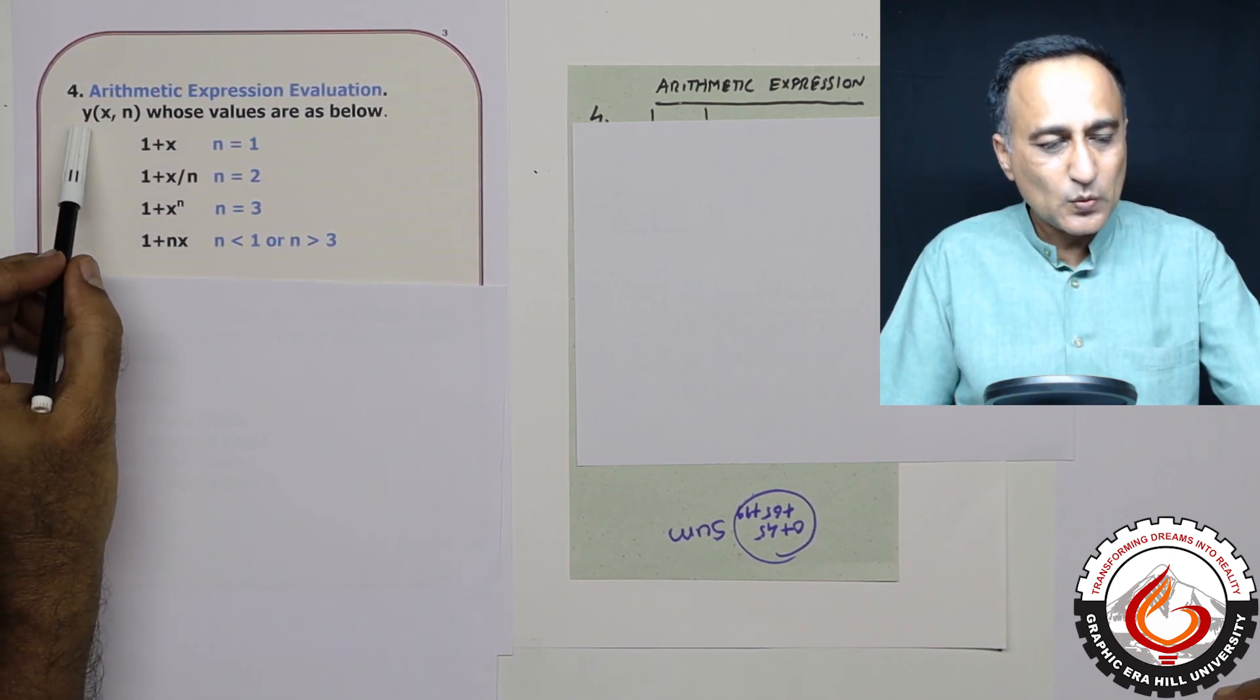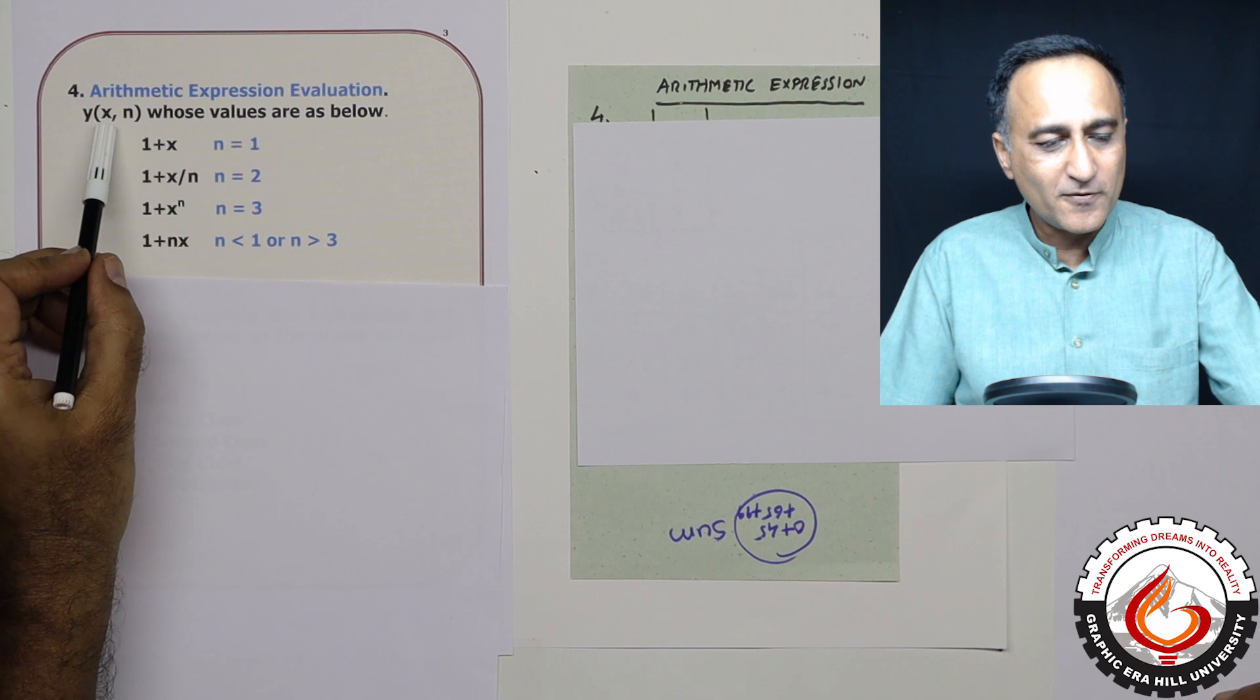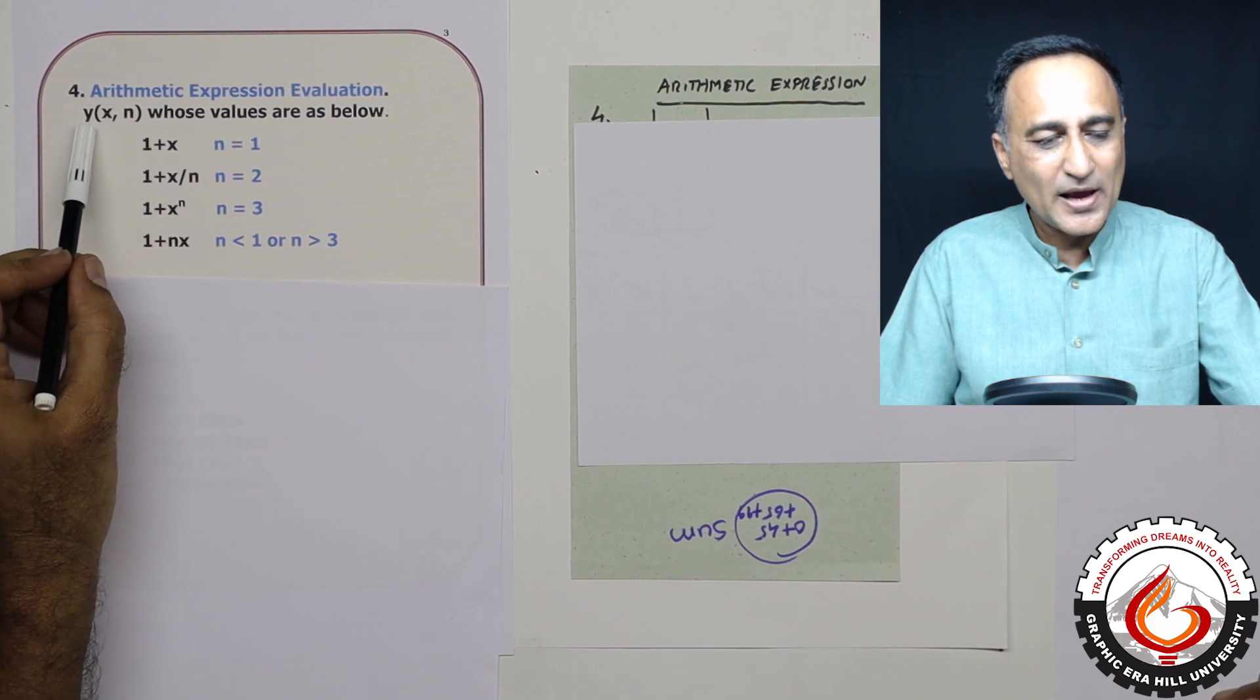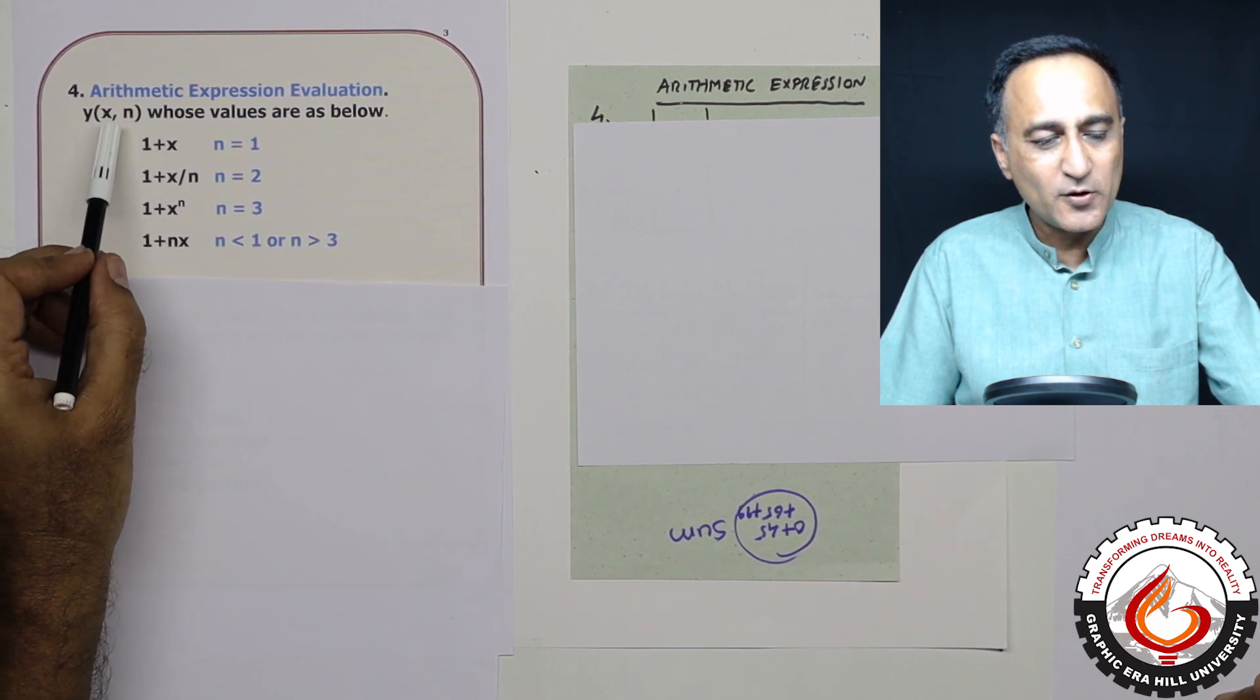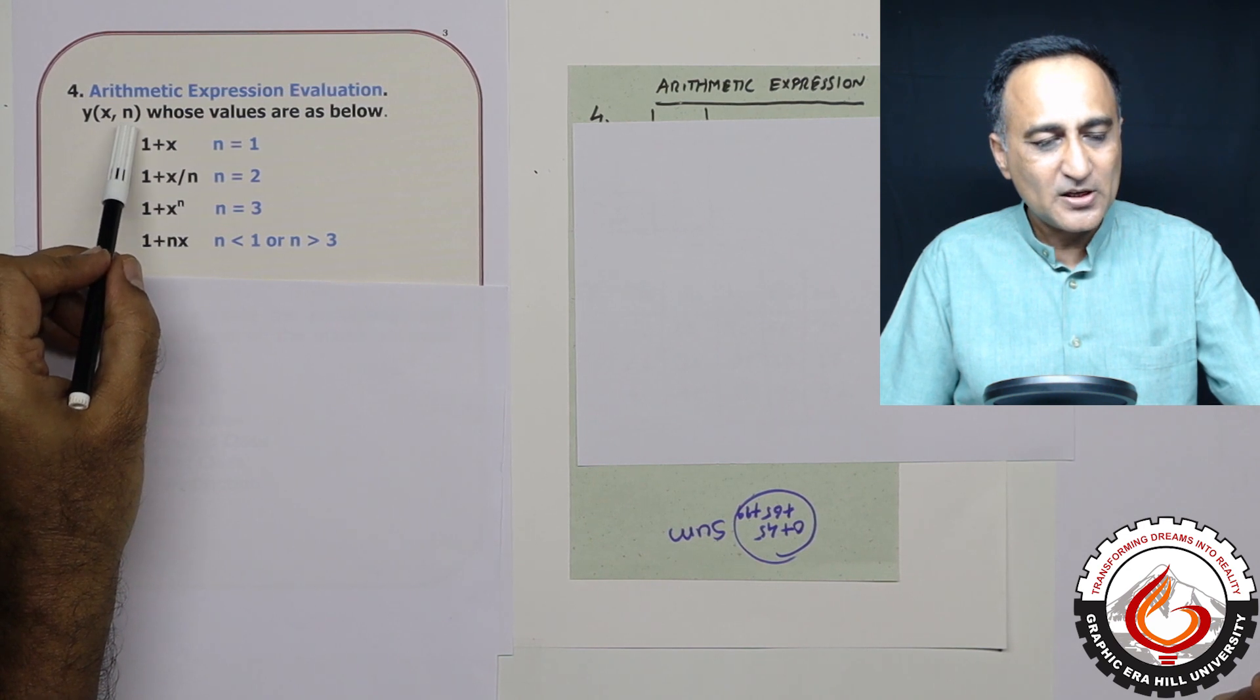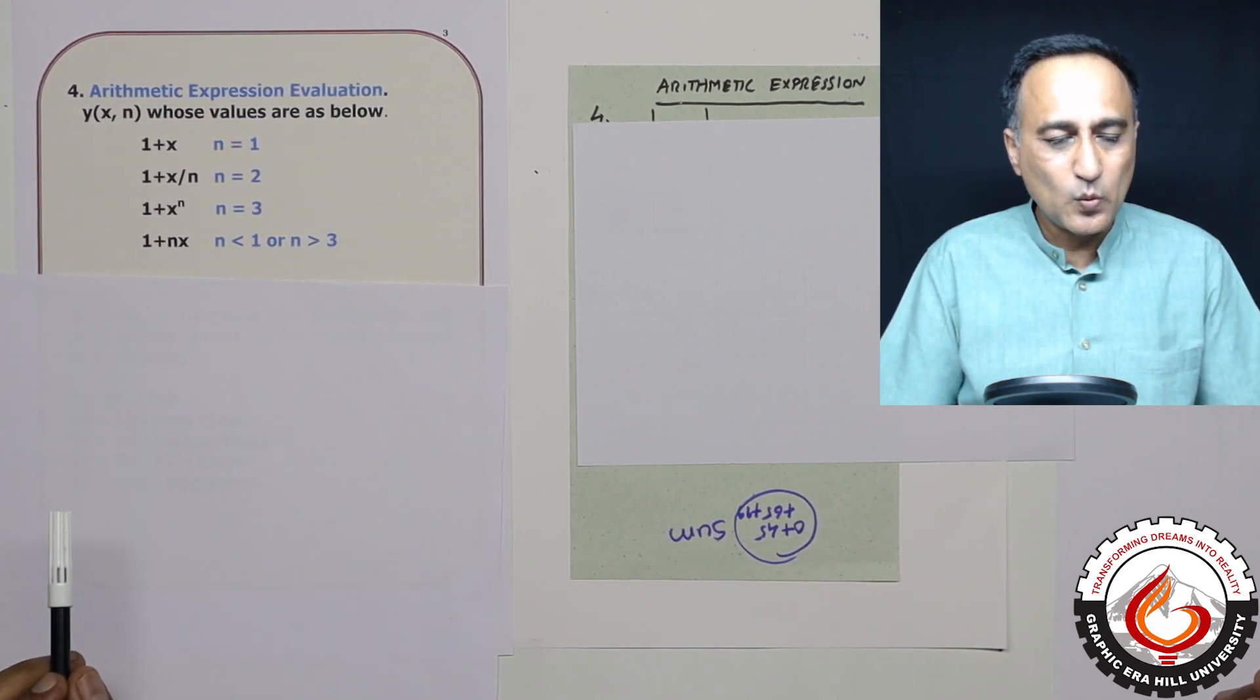The way to read this is y is a function of x and n. That means the value of y depends upon the values of x and n. So based on the values of x and n, you are required to calculate y.